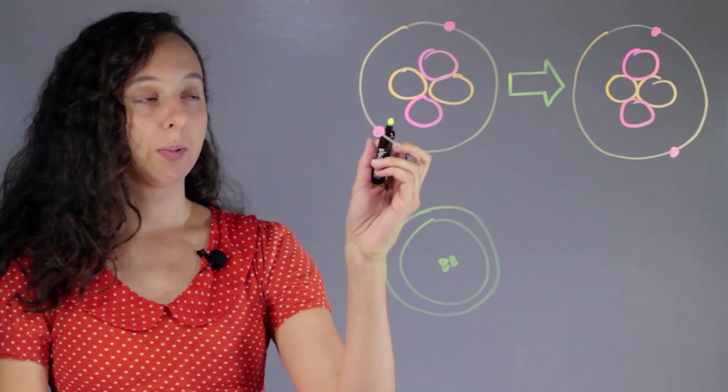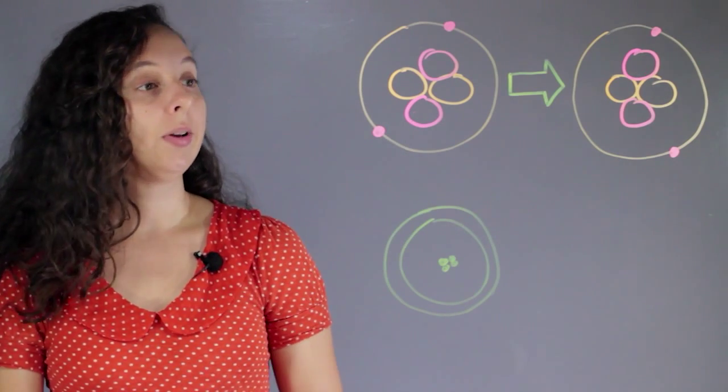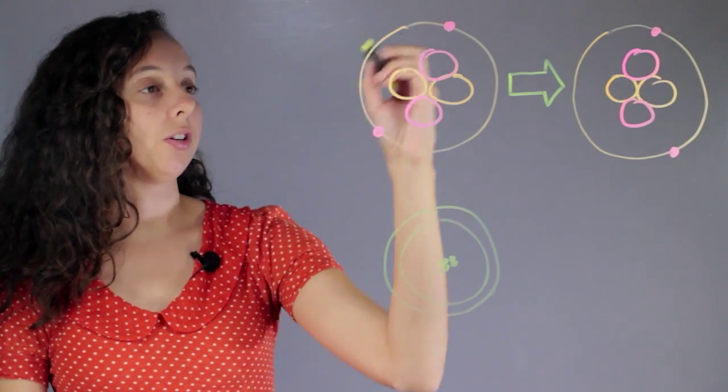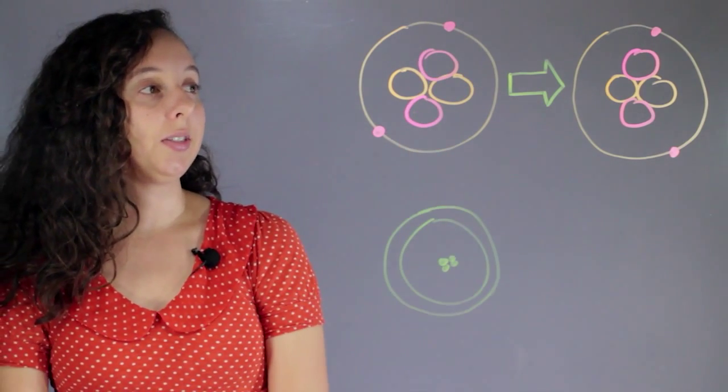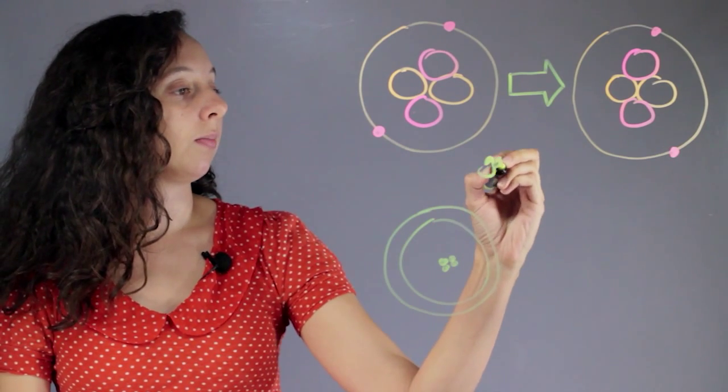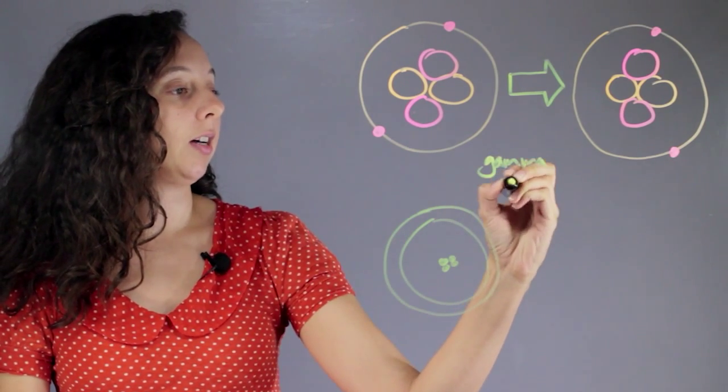So this is just a simple helium atom and so we have our two protons and our two neutrons and our two electrons and let's see what happens to it once it undergoes gamma decay.